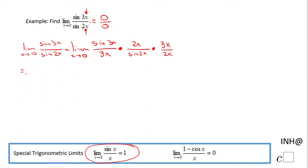So we have limit when x approaches zero of sine of 3x over 3x, times limit when x approaches zero of 2x over sine of 2x, times limit when x approaches zero of 3x over 2x.